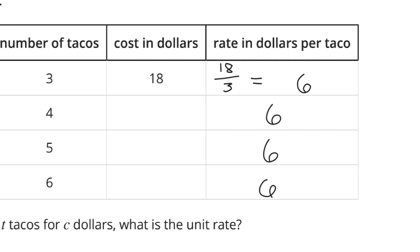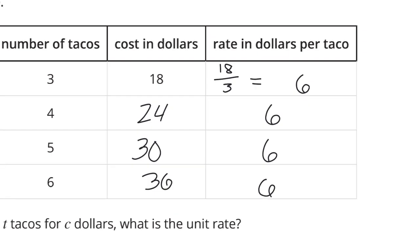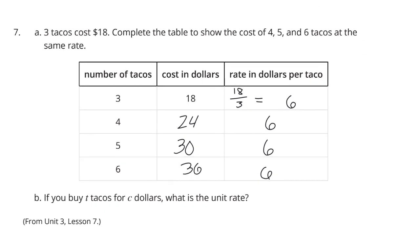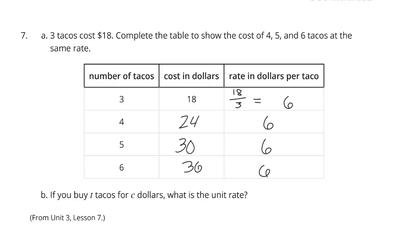So, if I have $6 per taco and 4 tacos, 6 times 4 is 24. 6 times 5 is 30. 6 times 6 is 36. Reminds me of that lesson we did a little while back. Equivalent ratios, or what was it? Equivalent ratios have the same unit rate. That's it.